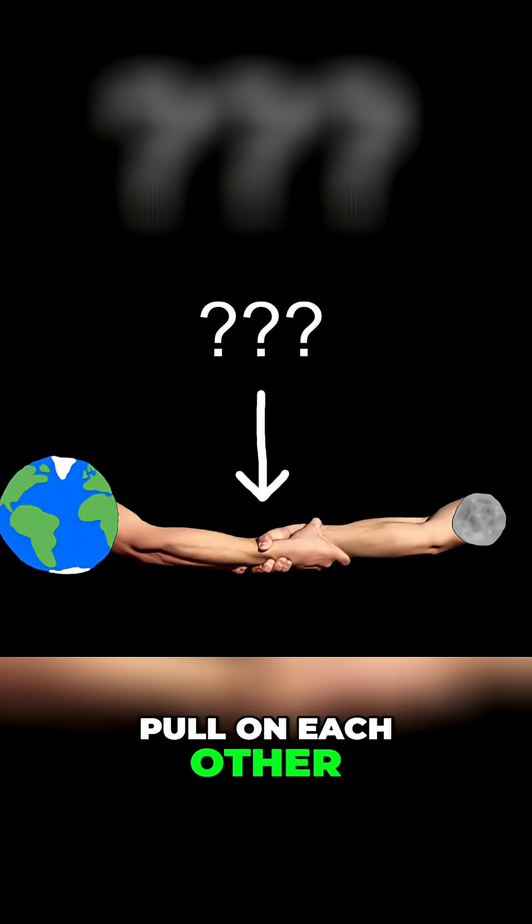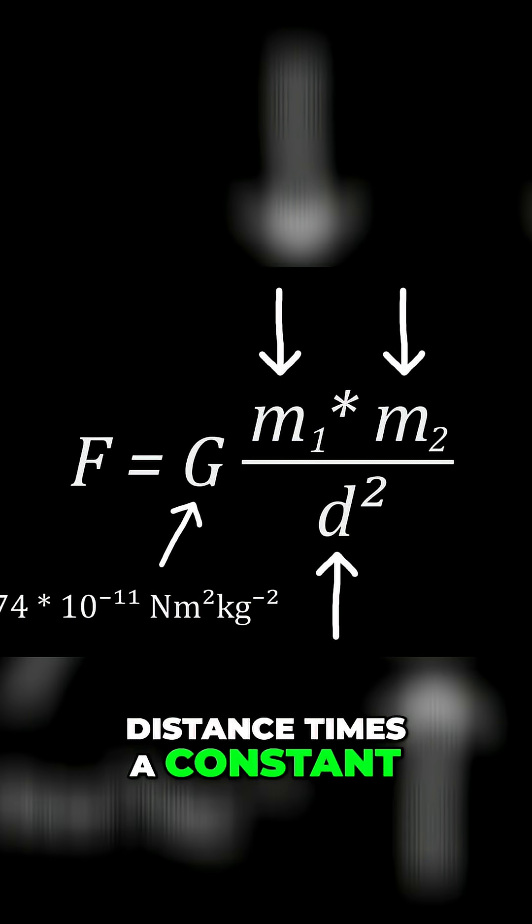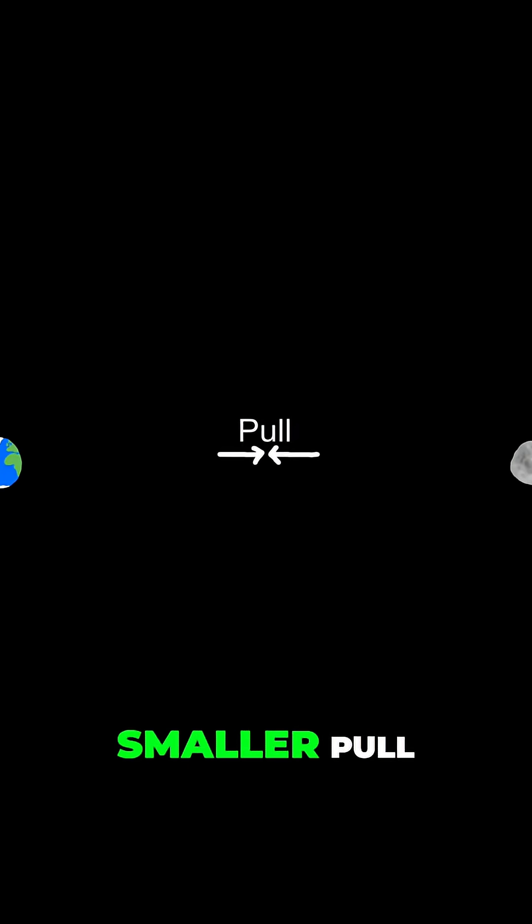In other words, how much do bodies pull on each other given their mass and distance times a constant? Bigger mass, bigger pull. Bigger distance, smaller pull.